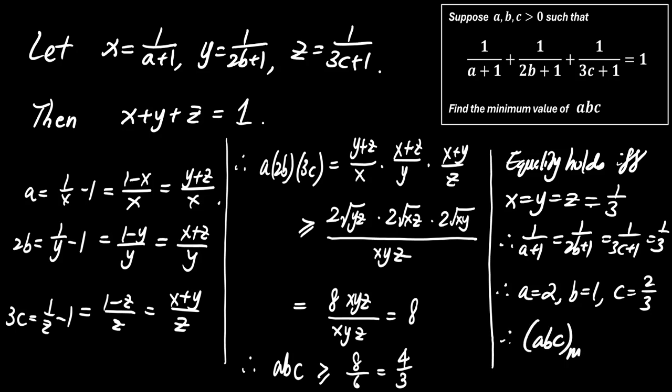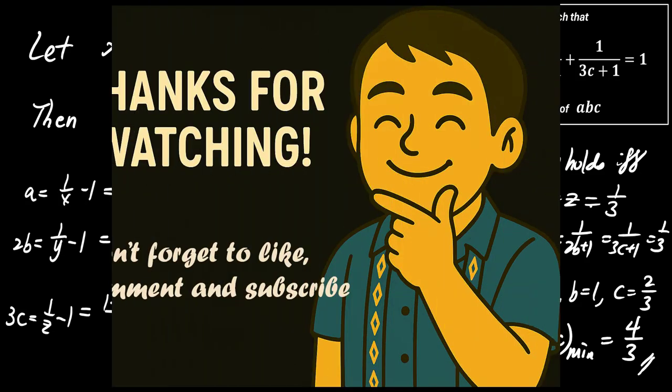So the minimum value of ABC is 4 divided by 3. Thanks for watching. Don't forget to like, comment, and subscribe for more problem-solving videos.